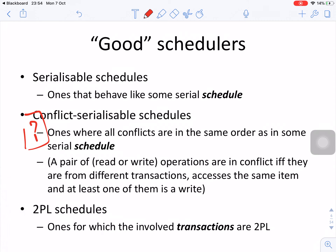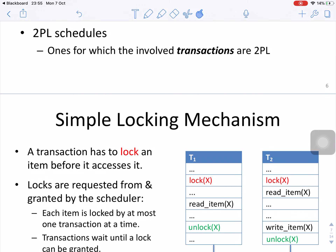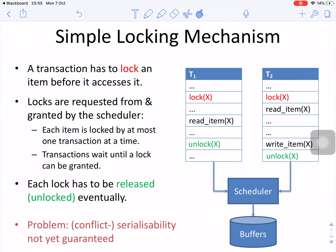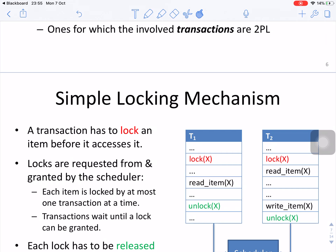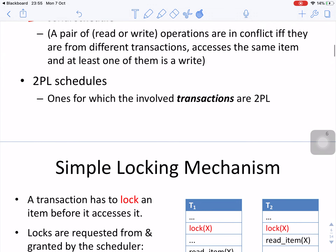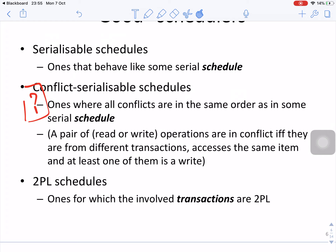A pair of operations are in conflict if and only if they are from different transactions, access the same item, and at least one is a write. A two-phase lock schedule is one for which all involved transactions follow the two-phase locking protocol.